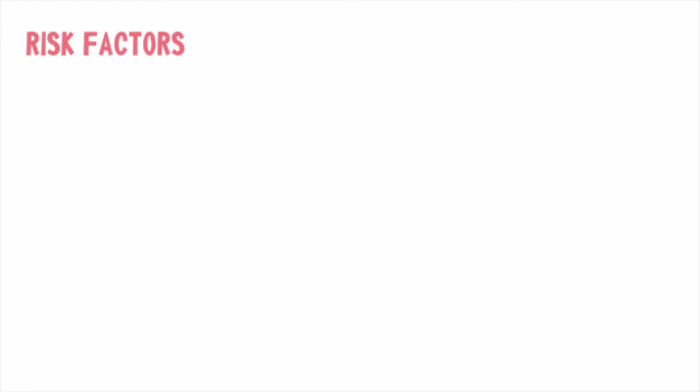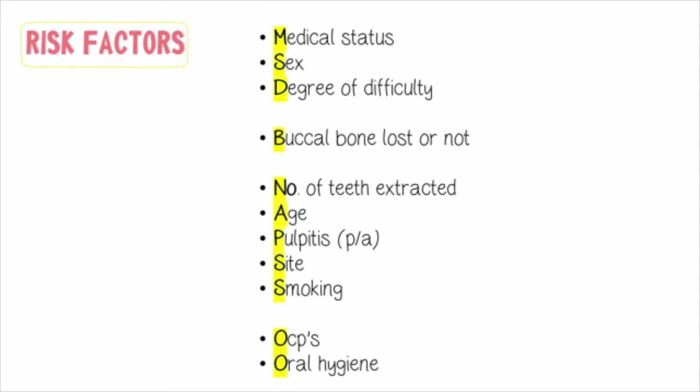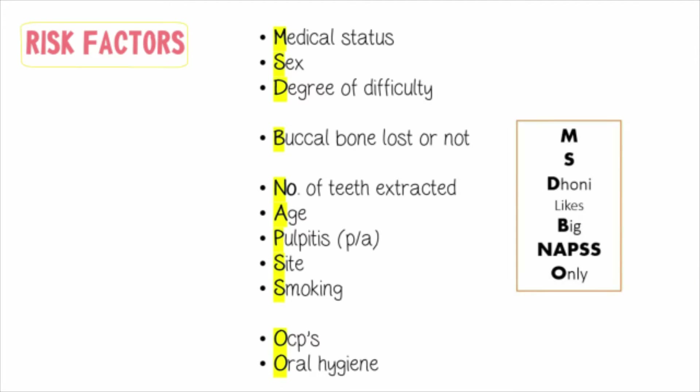Risk factors include: the medical status or condition of the patient; sex — dry socket is more commonly seen in females than males; the degree of difficulty encountered during extraction and whether the buccal bone was left intact; the number of teeth extracted; the patient's age; whether there was pulpitis in the extracted tooth; the site of extraction; chronic smoking; whether the female patient is on oral contraceptive pills; and the patient's oral hygiene. These 11 points can be remembered with a mnemonic.